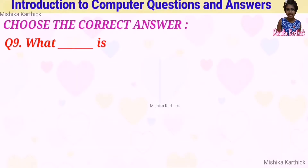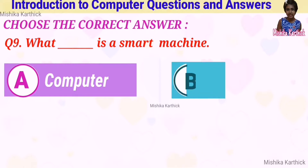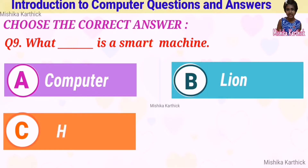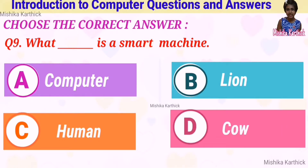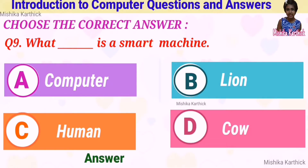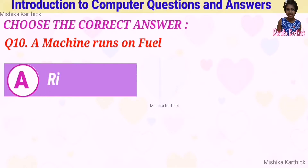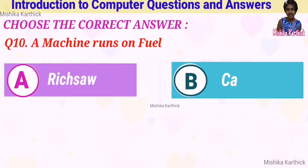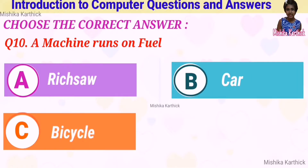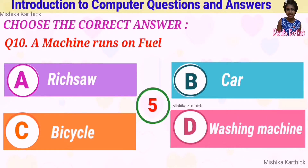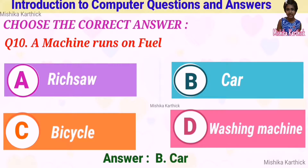Question 9: what dash is a smart machine? Options: A. Computer, B. Lion, C. Human, D. Cow. Answer: A. Computer. Question 10: a machine that runs on fuel. Options: A. Rickshaw, B. Car, C. Bicycle, D. Washing machine. Answer: B. Car.